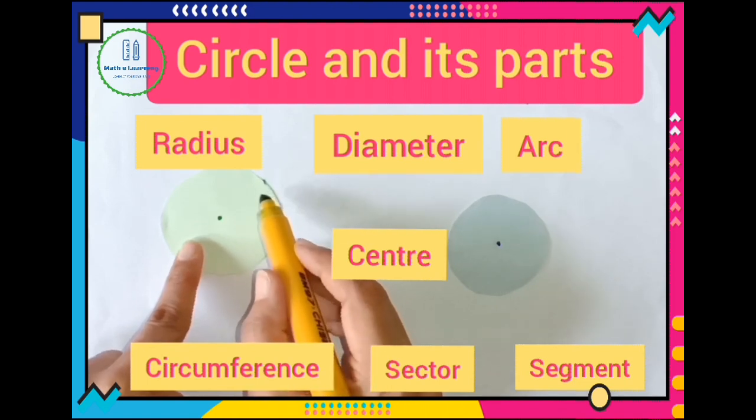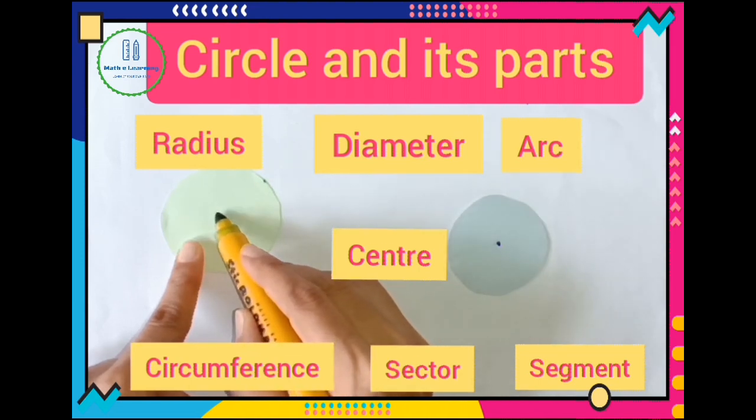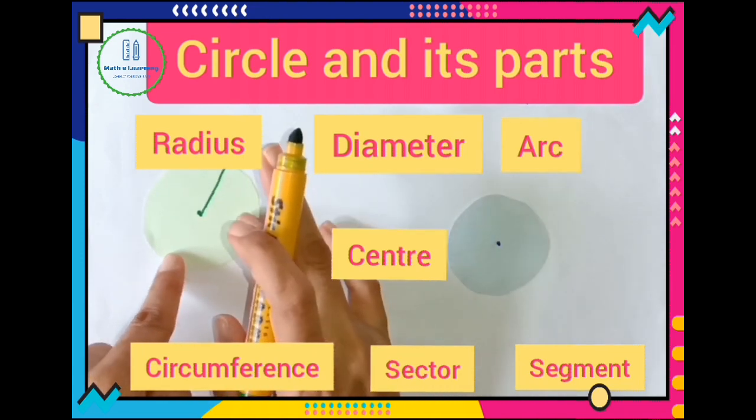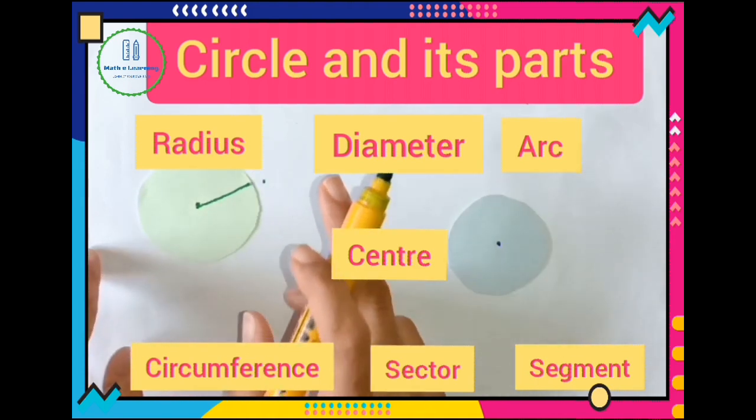For example we take this point. Now I join these two points and I have one line segment. This line segment is called radius.